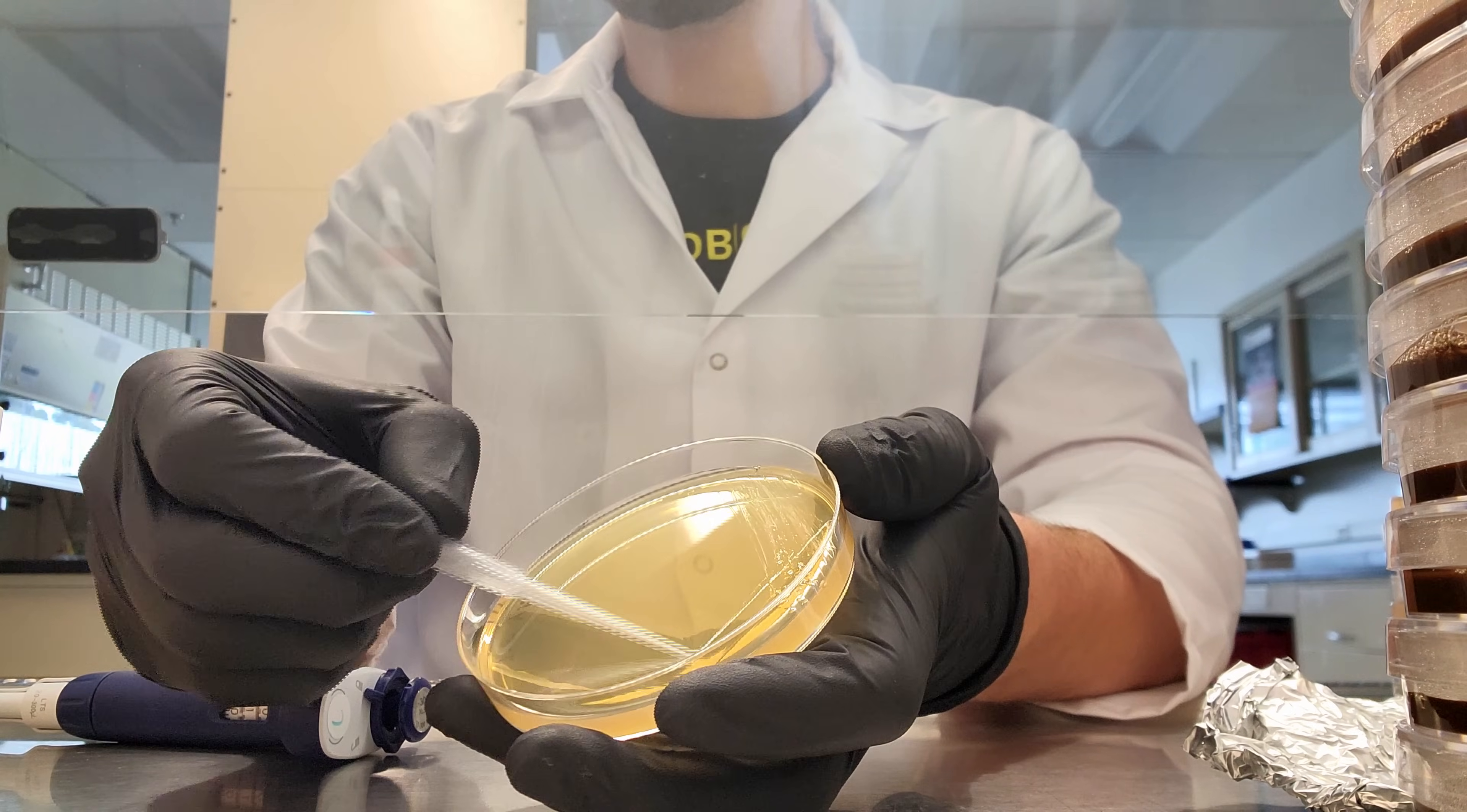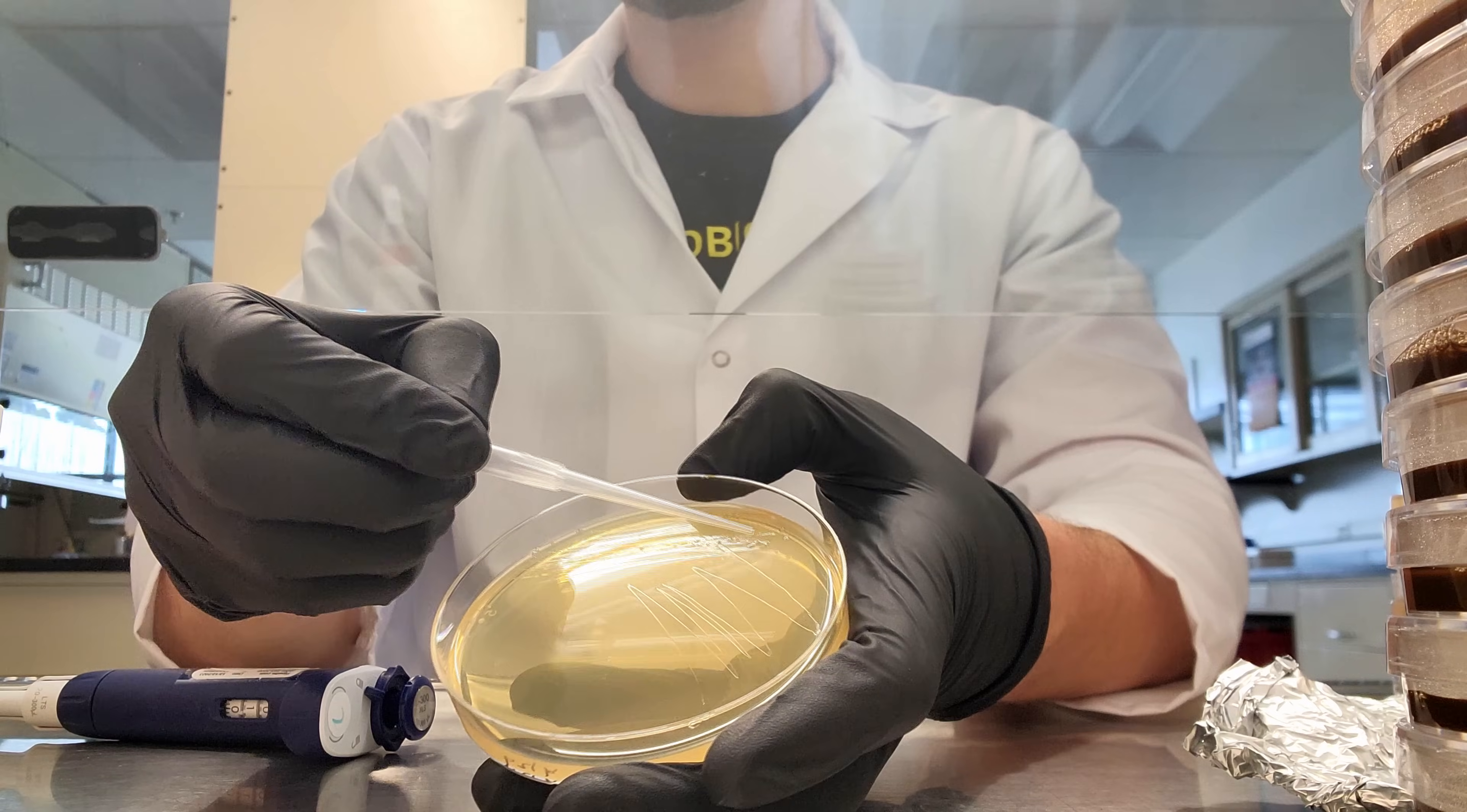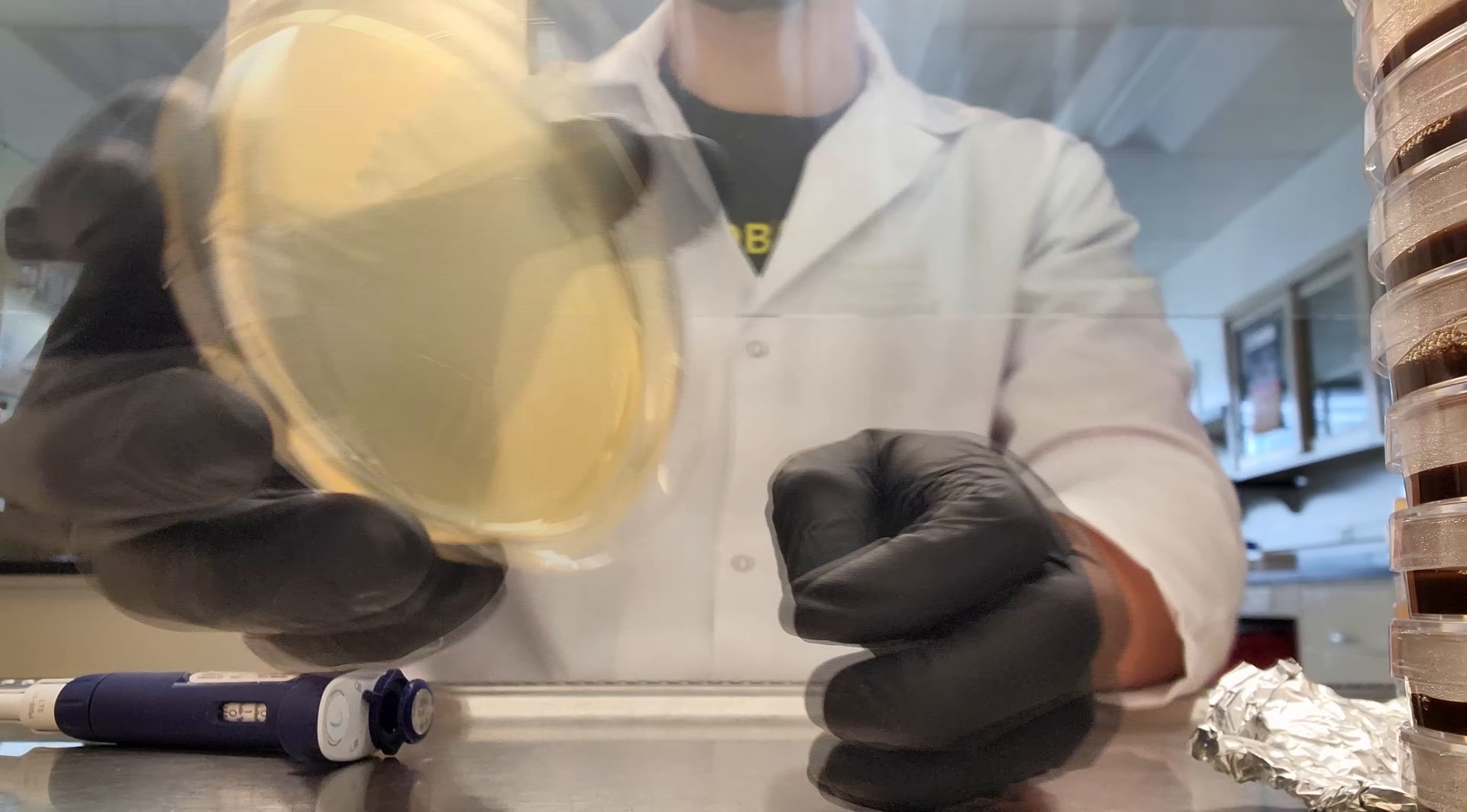I smeared it around, got a clean pipette tip, dragged through the previous streak, and then streaked around. Then I'm going to drag through with a new clean tip into those set of streaks and streak that around. This will guarantee you get beautiful individual colonies. I also have a short on streak plates.